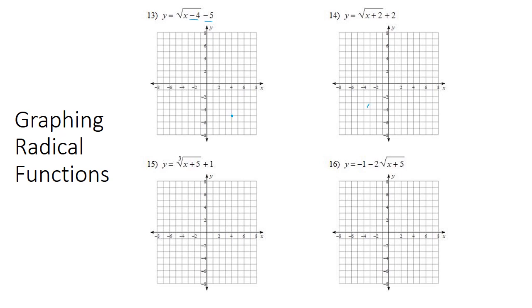Next, we're going to check and see if it's been reflected. So there is not a negative in front of the radical. So it has not been reflected, which means our graph is going to go up and not down.